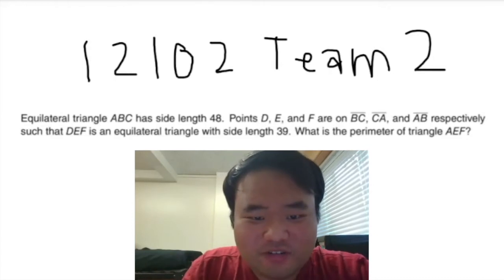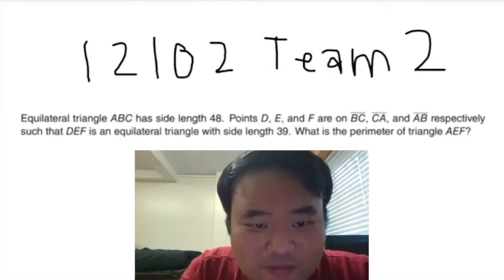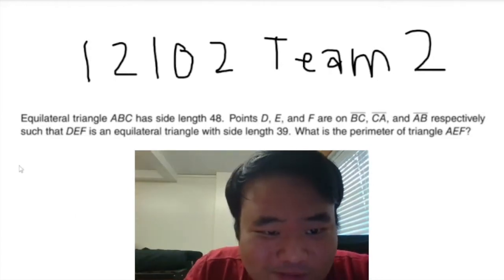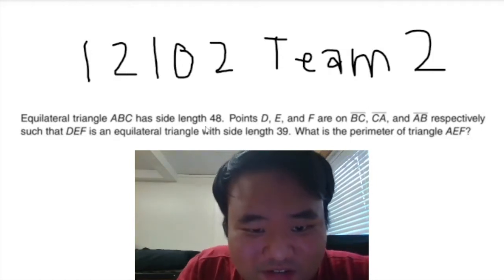Hello everyone, this is problem 2 from the team round of 12102. Equilateral triangle ABC has side lengths 48.